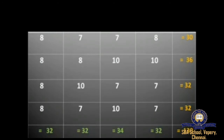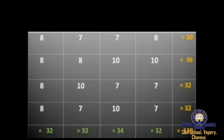When you add all the row totals — 30 + 36 + 32 + 32 — the answer is 130. Similarly, when you add the column totals — 32 + 32 + 34 + 32 — the answer is also 130. From this we can conclude that our assumed values are correct.